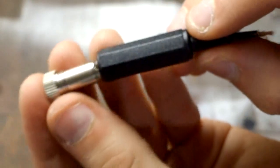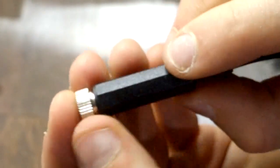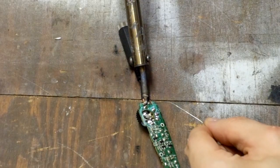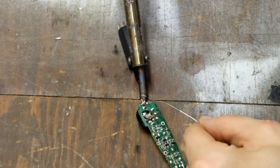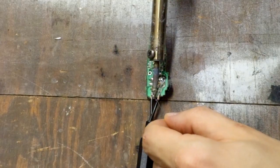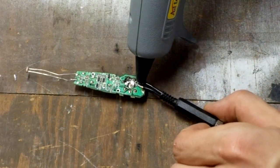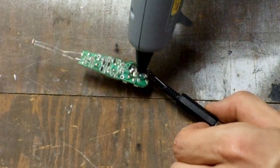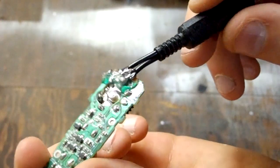Now slide the cover back on and screw it into place. Next, solder the two wires onto the circuit board. Once that's done, cover it in hot glue. This will help prevent the wires from straining the circuit board and ripping the traces off.